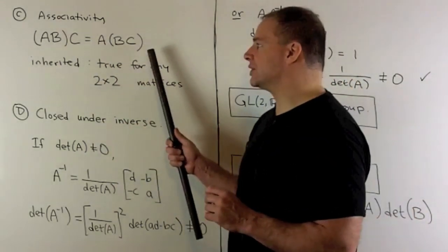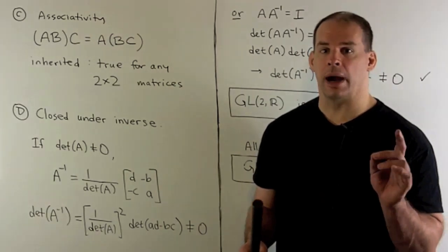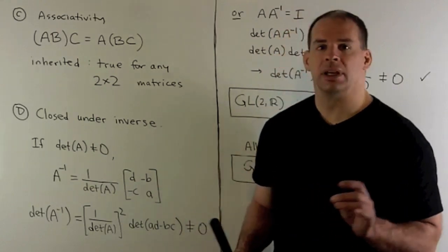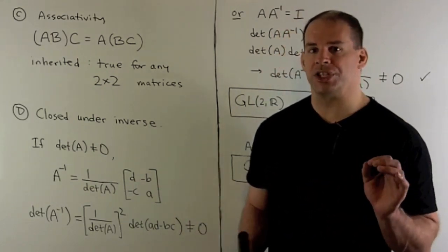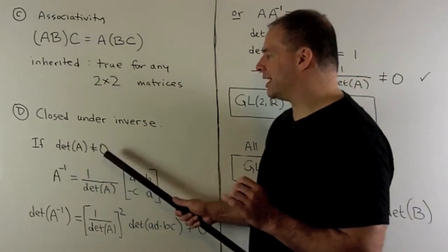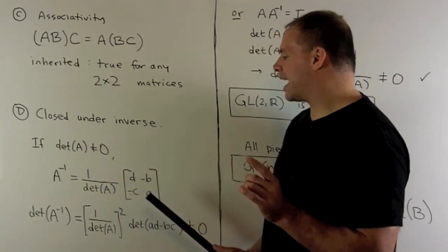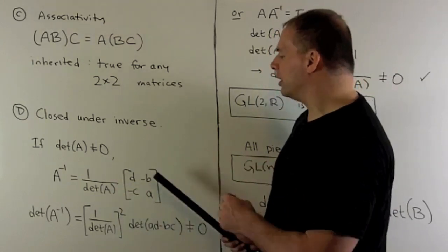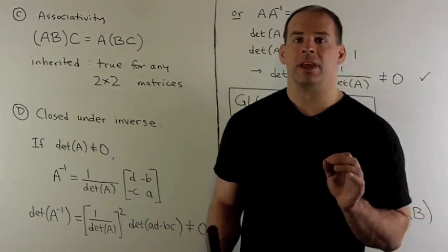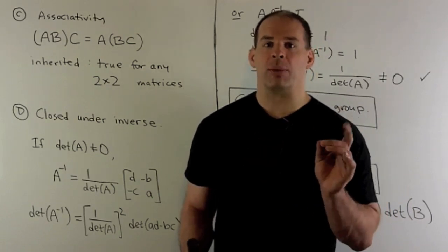Now for G being closed under taking inverses. So I'm working with two by two matrices—we have an actual formula. So if the determinant is non-zero, A inverse is given as one over the determinant times—we flip on the diagonal, negate off the diagonal.